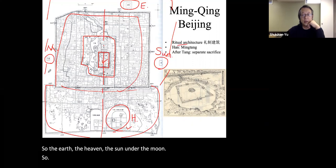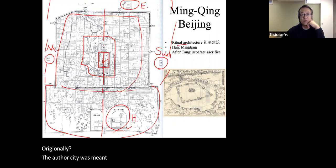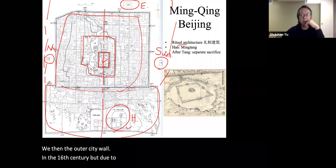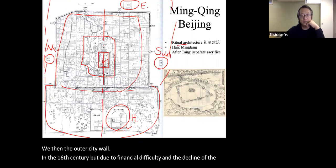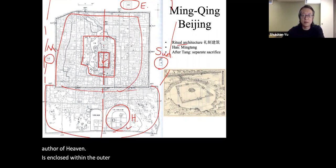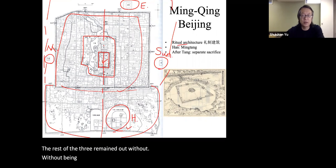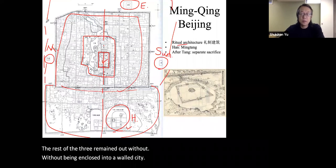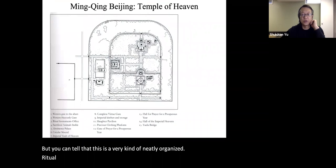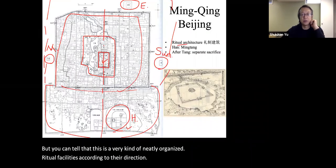Originally, the Outer City was meant to enclose all four major altars within its walls. In the 16th century, due to financial difficulty and the decline of the Ming dynasty, only the southern part was completed, and only the Altar of Heaven was enclosed within the Outer City. The other three remained without being enclosed in a walled city. But clearly this is a neatly organized ritual facility arrangement, oriented by direction and dedicated to key spirits.